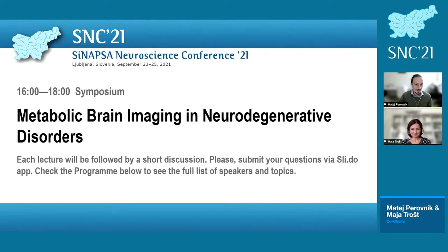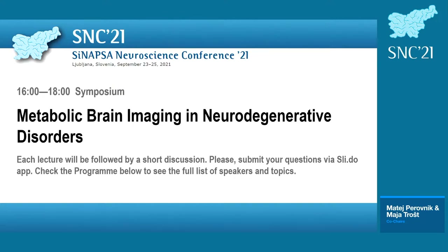Thank you. Just before we begin, I'd like to remind everyone that you can still submit your question via the live stream page. You'll see the box on the right part of the screen next to the video. With that, it's now my pleasure to introduce our first speaker, Dr. Nikolai Franzmaier. Dr. Franzmaier is the principal investigator and junior research group leader at the Institute for Stroke and Dementia Research at the University Hospital in Munich, Germany. Today he'll address the concept of connectivity-mediated tau spreading and neurodegenerative tauopathies.